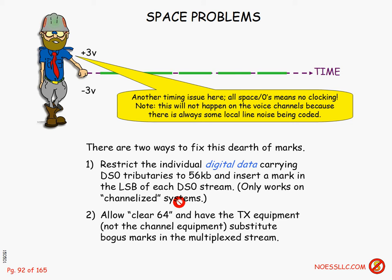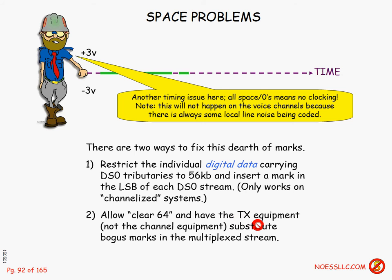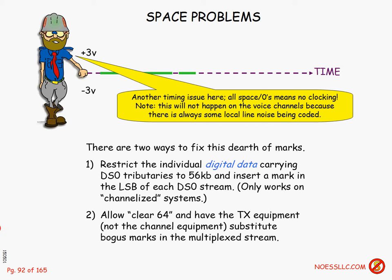Each channel gets an 8-bit byte 8,000 times per second, creating 64 kilobits. If the system is not channelized, you don't have this option, so you'll need the second method — allow what's generally known as Clear64, where the transmitter equipment substitutes bogus marks into the multiplex stream after all the individual channels are combined.